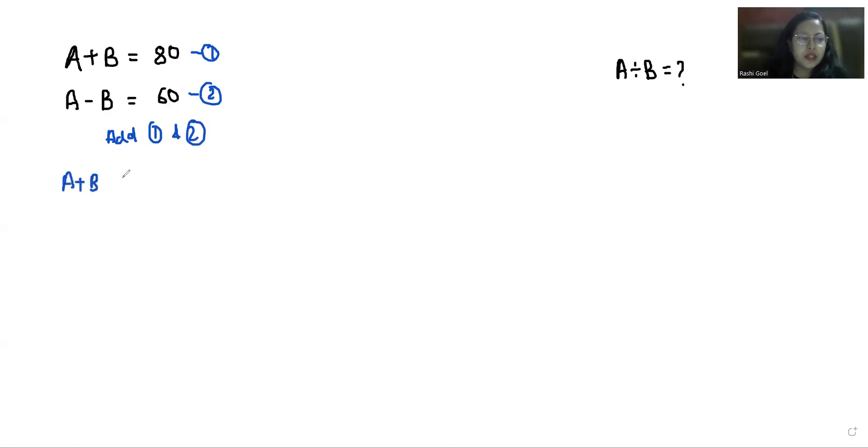So a plus b plus a minus b equals 80 plus 60. So a plus a is 2a and we can cancel out positive and negative b, and 80 plus 60 is 140.